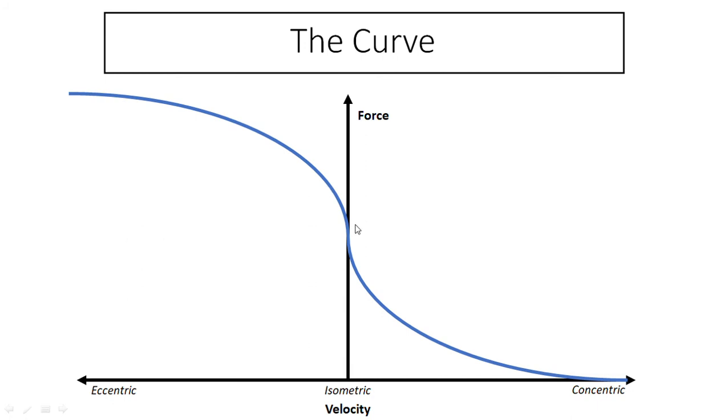If we then put maybe 140% of our one rep max on the bar and we did the same thing, we can try and lower it as slow as we possibly can, but we're not going to be able to control it very well because it's so heavy. So it's going to be somewhere around here. We're going to produce huge amounts of force, however, the velocity is going to increase just because of the extremely high loading.